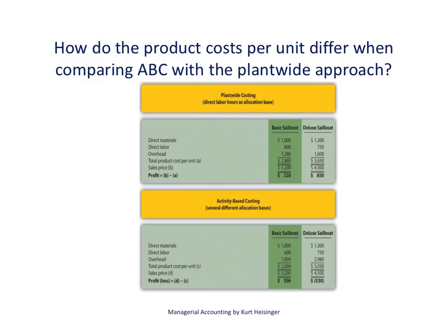At the very end of the part one video we established what the product cost would be for each of our products — the basic sailboat and the deluxe sailboat — using activity-based costing. That's what I've outlined here in this section. With this slide, the extension of this discussion, we're going to take a look at how this compares to the plant-wide costing approach and what the profit looks like for each of these approaches.